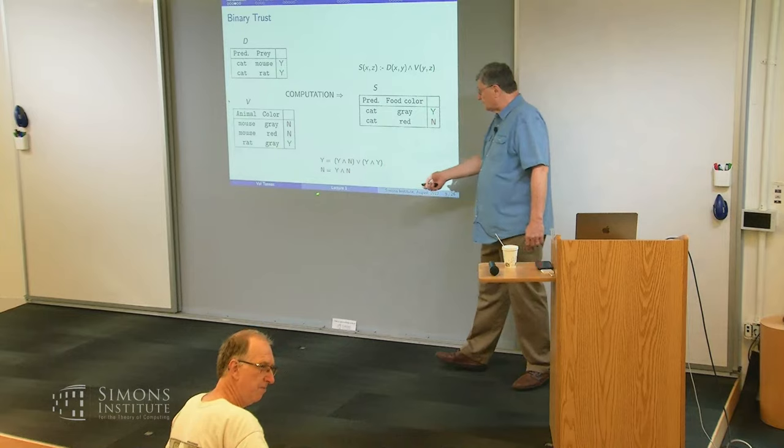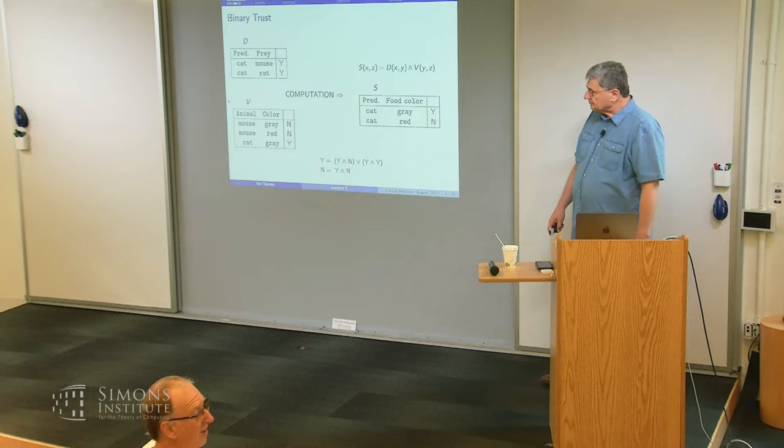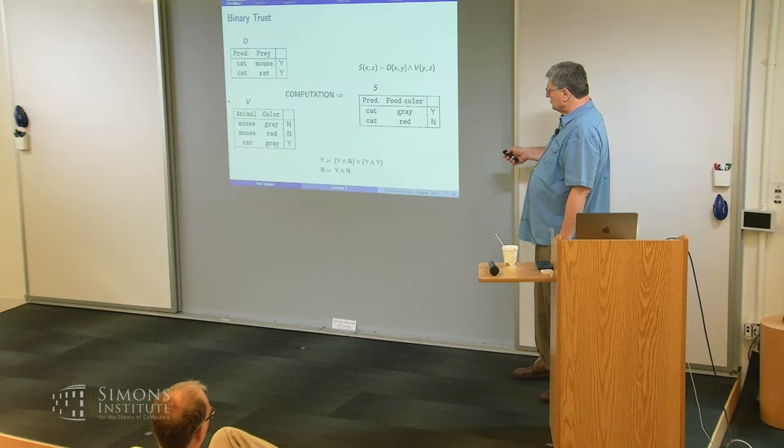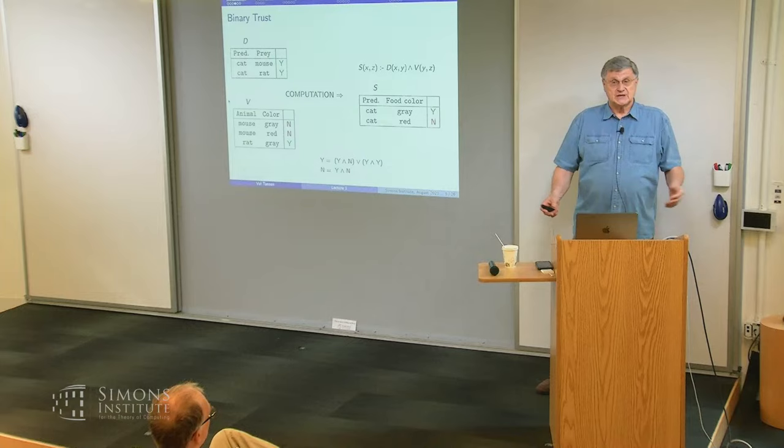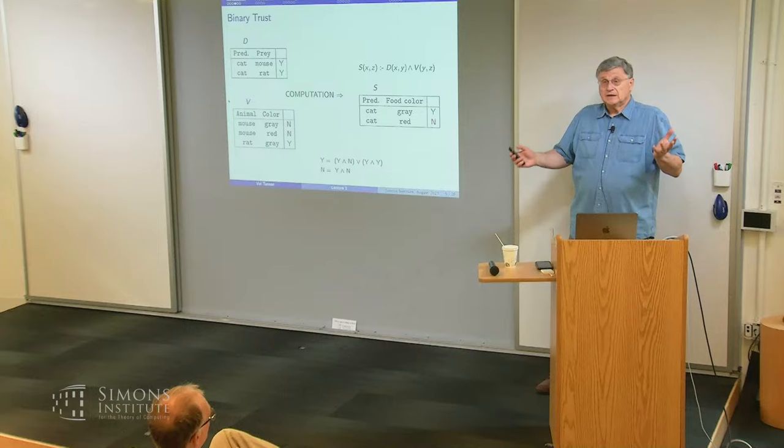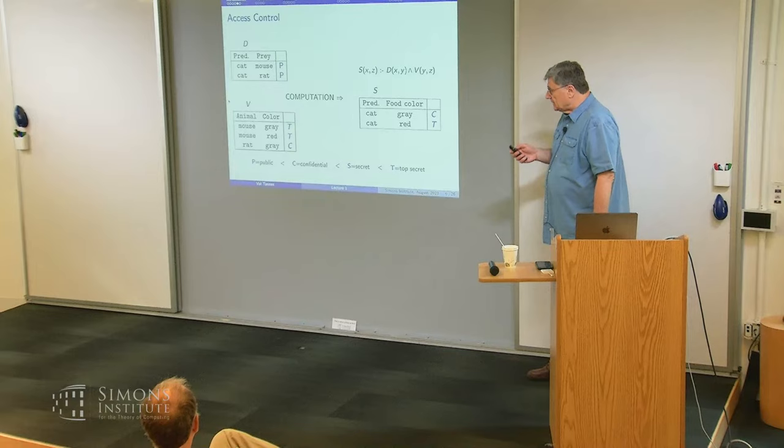So she labels with N from no, the two tuples about the color of mice. But she also heard that Val's information about rats is more reliable. So the question is, given these annotations on the two data sources, Dan and Val's, how should Sudipa compute, or her algorithms, how should they compute annotations on her data? What part of her data is to be trusted and what not?